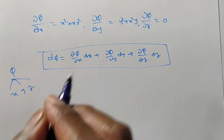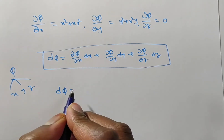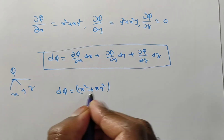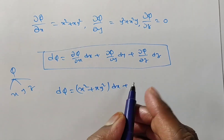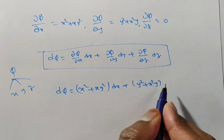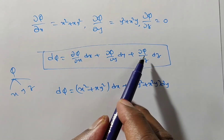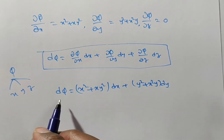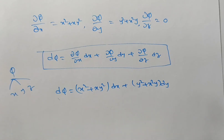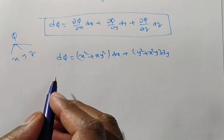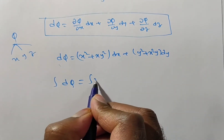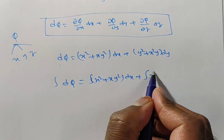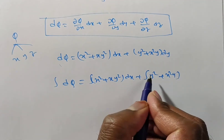Substituting the values: dφ = (x² + xy²)dx + (y² + x²y)dy + 0·dz. To find φ, we integrate both sides: ∫dφ = ∫(x² + xy²)dx + ∫(y² + x²y)dy. However, since terms like xy² involve both variables, we cannot integrate directly — we need to separate variables or use the inspection method.